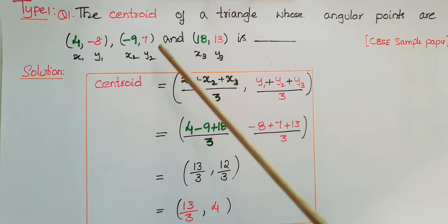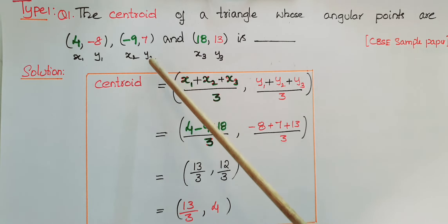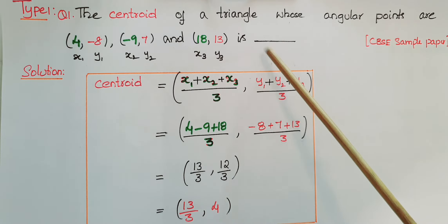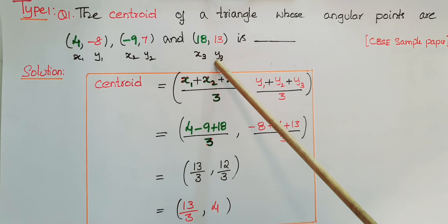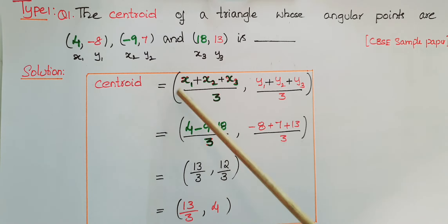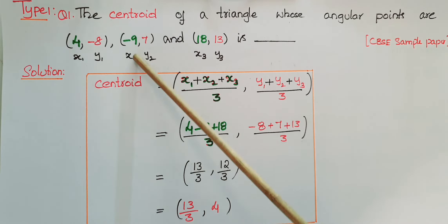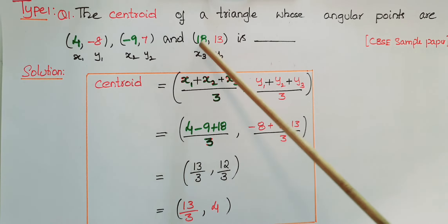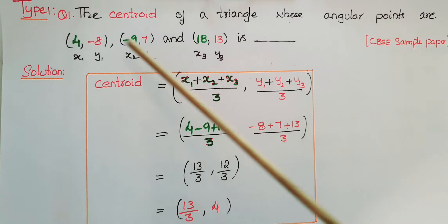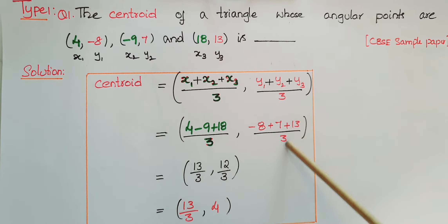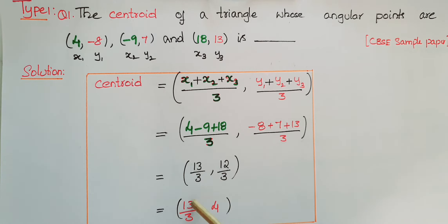This is the first type of problem: the centroid of a triangle whose vertices are (4, -8), (-9, 7), and (18, 13) is dash. Here the vertices of the triangle are given and we have to find the centroid. We know that the centroid equals the sum of all x-coordinates divided by 3, so (4 + (-9) + 18) / 3, and the sum of all y-coordinates: (-8 + 7 + 13) / 3.